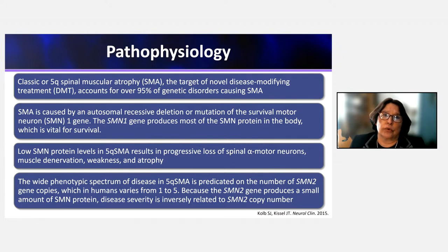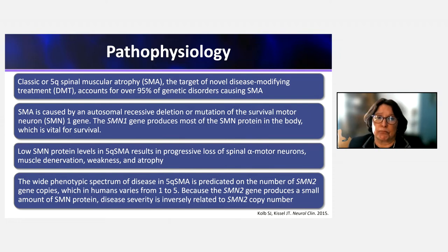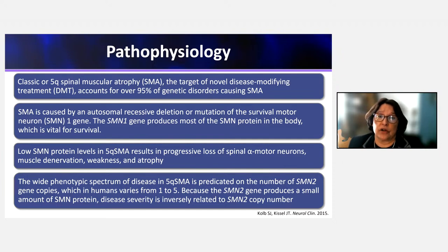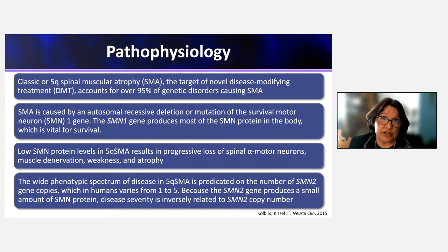The product of the SMN1 gene is the SMN protein, which is vital for survival. SMN1 produces the lion's share of SMN protein in the body. Low levels of SMN protein, as seen in 5Q-SMA, result in progressive loss of spinal alpha motor neurons that are exquisitely sensitive to these low levels, resulting in denervation, weakness, and atrophy.